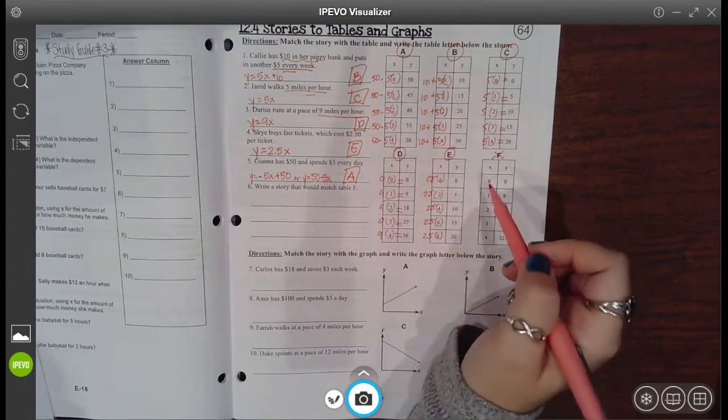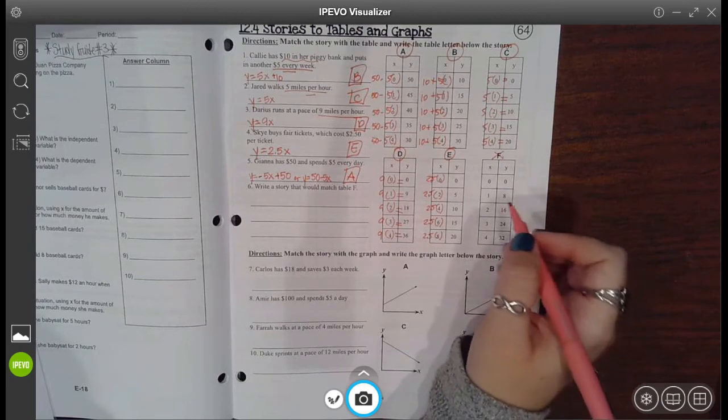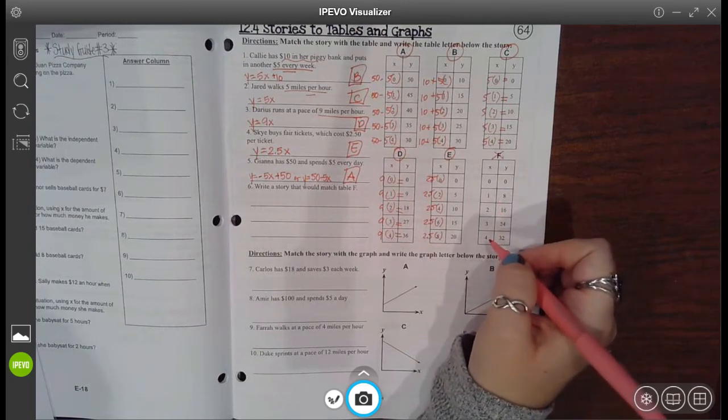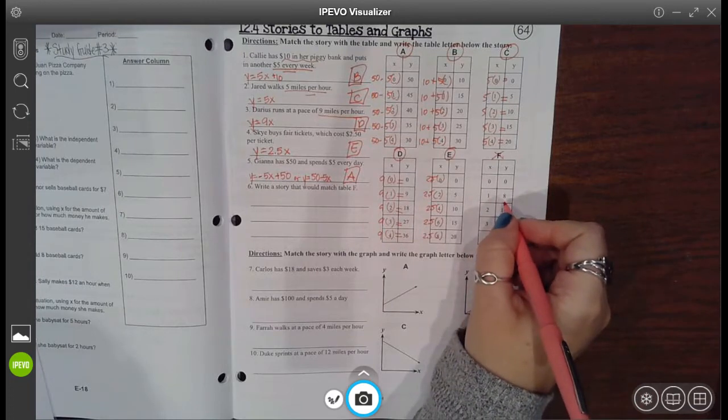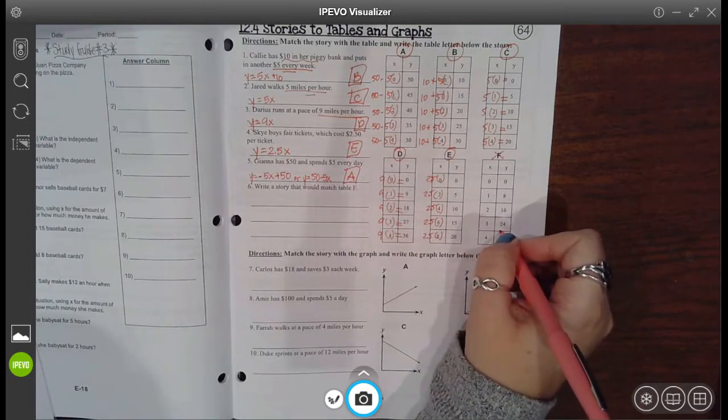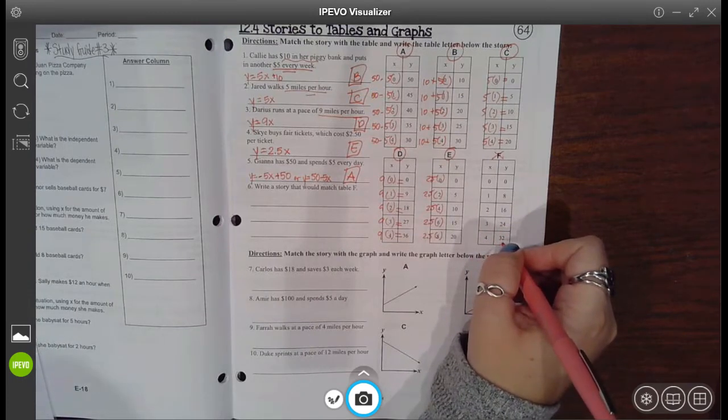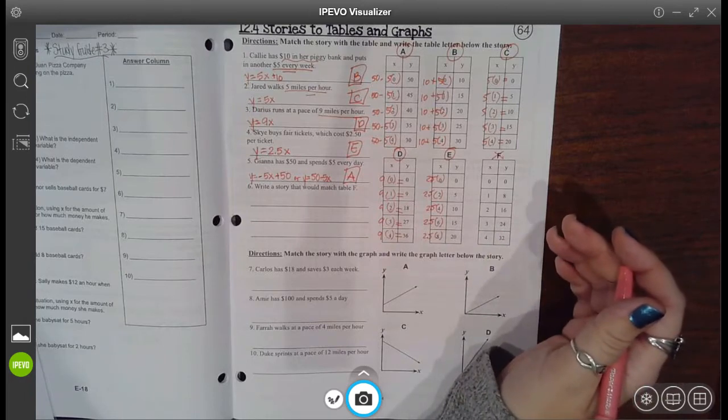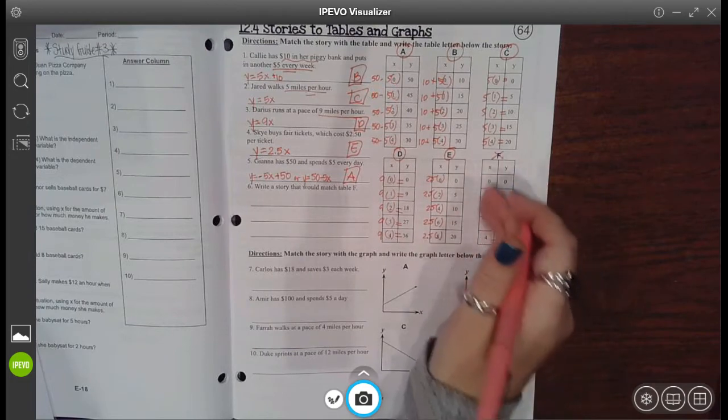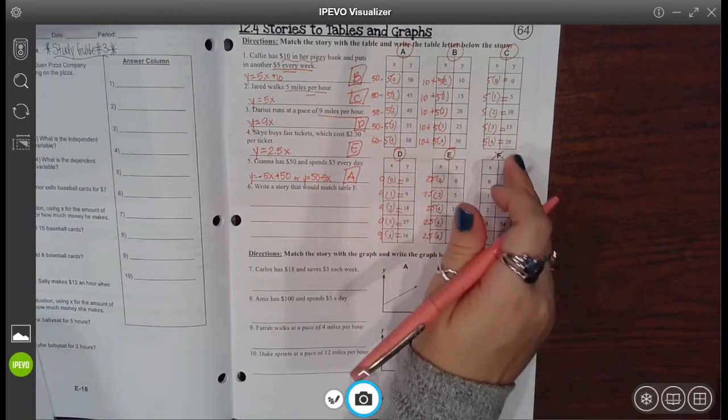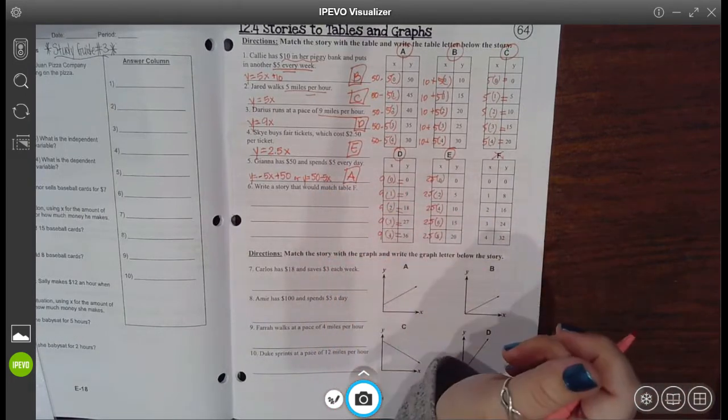Okay, now the last thing they wanted you to do for this top section was to try to write your own story for table F. So the first thing is, well, what's the pattern? 1 times 8 is 8, 2 times 8 is 16, 3 times 8 is 24, and 4 times 8 is 32. Okay, so as long as you came up with any story that involves multiplying your independent right here with 8 in order to get your dependent thing in the story Y, then that would be a type of story for F.